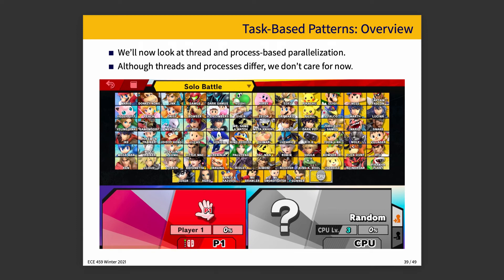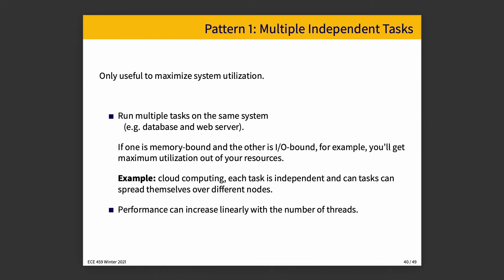We'll be looking at thread and process-based parallelization. There are some choose-your-fighter moments — we have strategies available using threads or processes. We need to think about how to use those to address our problem. If we have multiple independent tasks, this is a way to maximize system utilization. If we have multiple things running on the same system — say a database and a web server — if one is memory-bound and the other is I/O-bound, you get the most use out of your resources because they use different parts of the system.